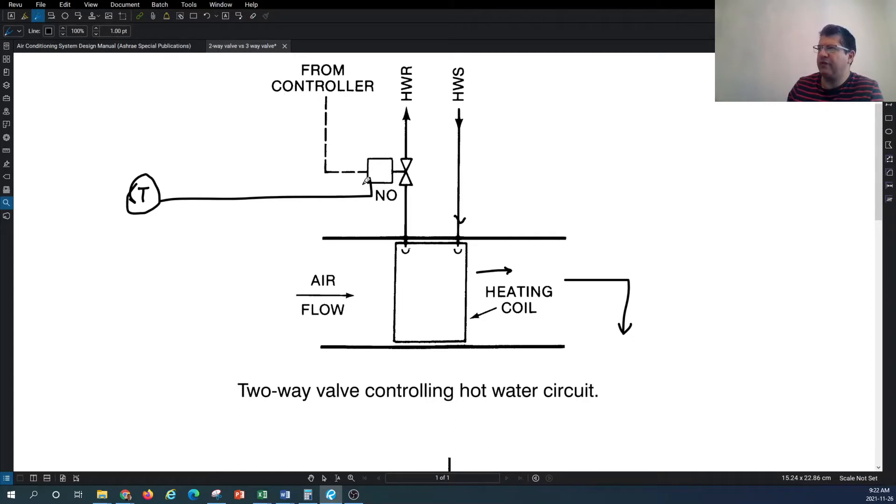The way that the two-way valve operates is that your main hydronic distribution system will respond to the modulation or position of this valve. If your valve is in, say, 30 percent open position, it will create higher pressure drop across the coil, and that higher pressure drop causes the proportional flow to pass through the coil. If you increase the pressure drop in the valve, you would get less flow through the valve.